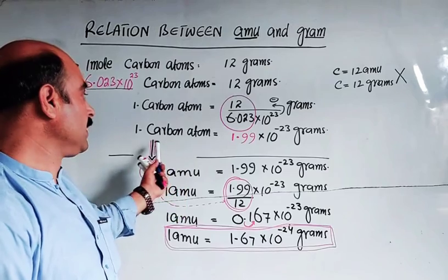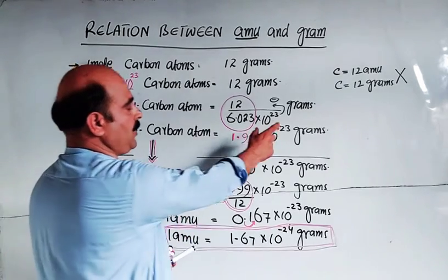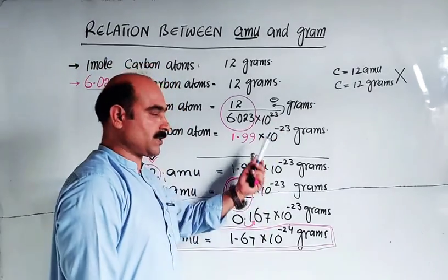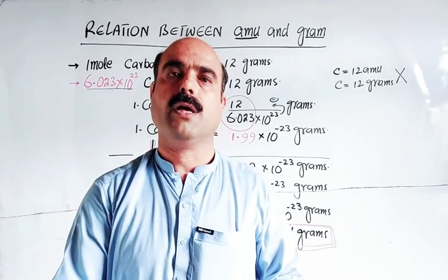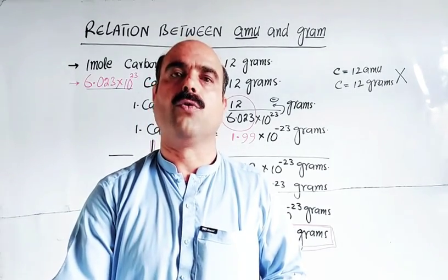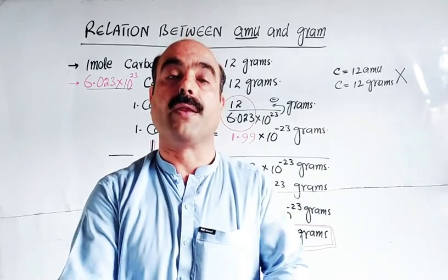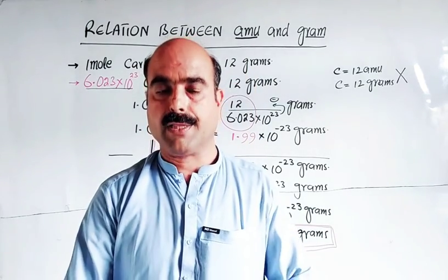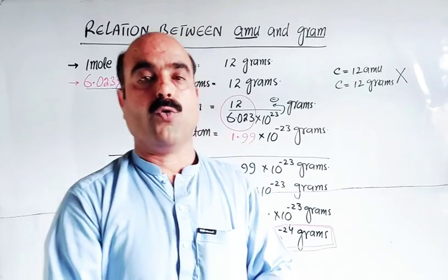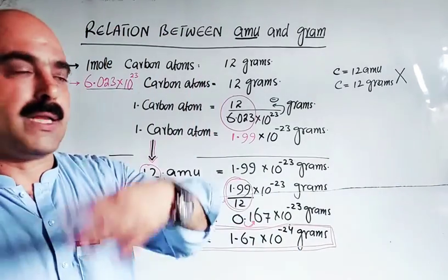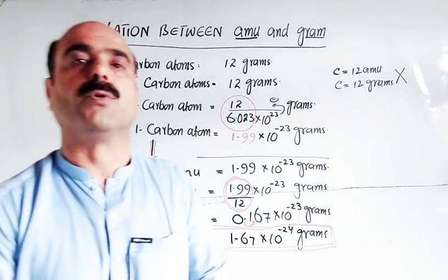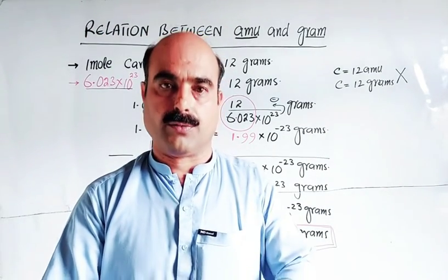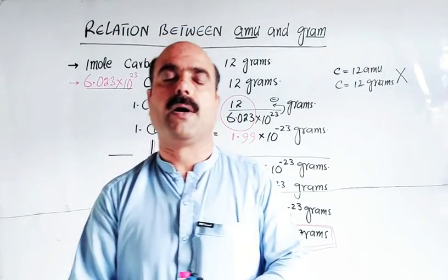Because 1 amu is NOT equal to 1 gram. The atomic mass of a single atom is a very small negligible value that is difficult to handle. That's why we use the concept of one mole - one mole of carbon atoms, one mole of oxygen. Automatically this gives us the mass of Avogadro's number of atoms, which is much easier to work with.